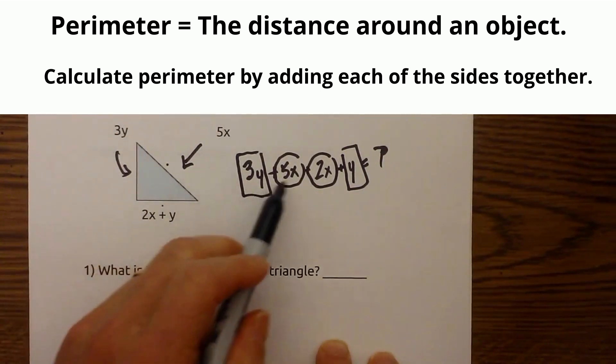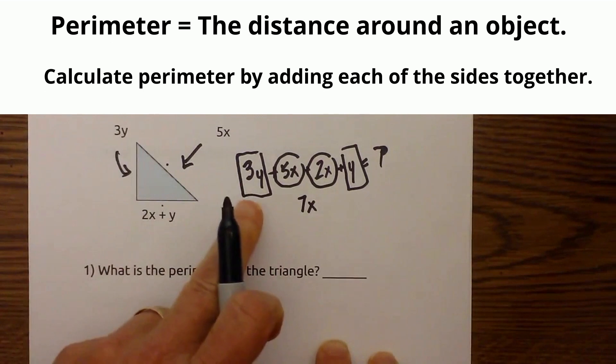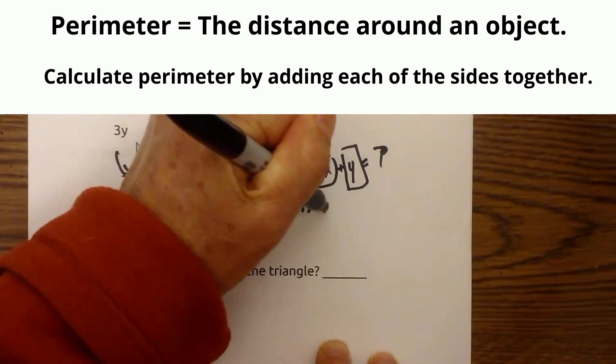So I'm going to have 5x plus 2x and that's 7x. And then I have 3y plus y and that equals 4y.